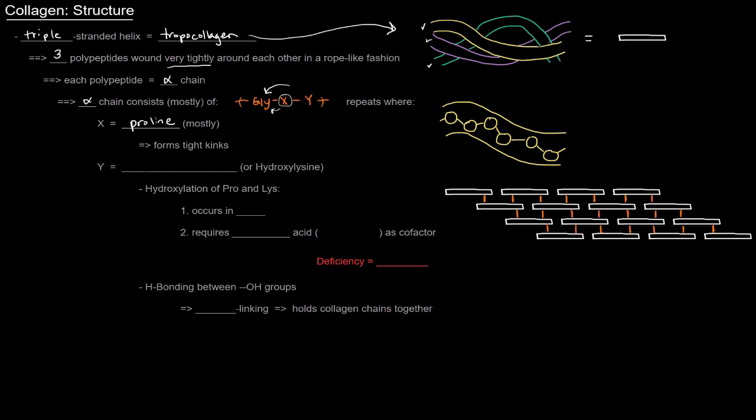And the Y is typically hydroxyproline or hydroxylysine. So what are hydroxyproline and hydroxylysine? They're just proline and lysine residues that have hydroxy groups attached to them. And the hydroxylation of those proline and lysine residues occurs in the rough endoplasmic reticulum. And that hydroxylation process requires ascorbic acid or ascorbate, which is also called vitamin C. Vitamin C - I'll just abbreviate that here as vite C - as a cofactor.